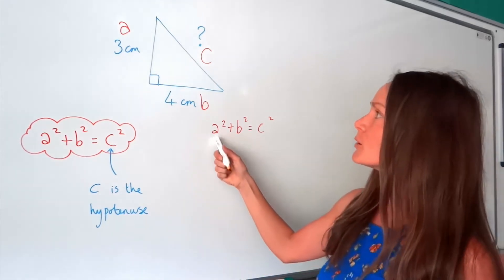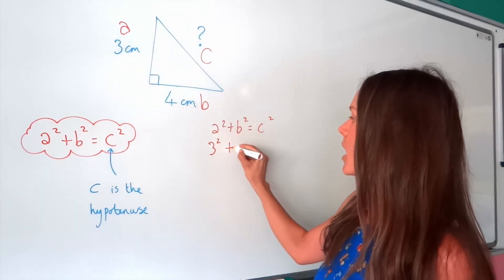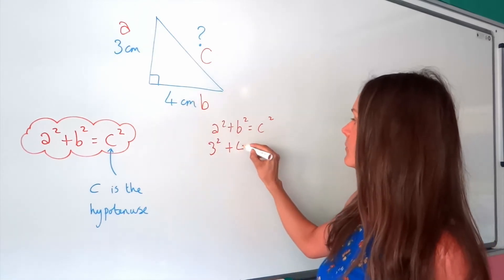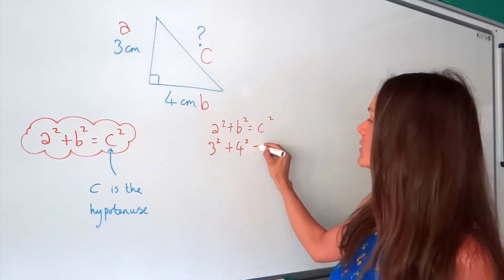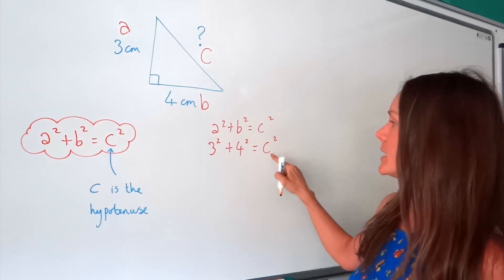And then I'm going to substitute in the values given in the question. So I know the value of a, it's three, so I'm going to write three squared. I also know the value of b, but I don't know c. So c just stays the same. So I've got c squared left over here.